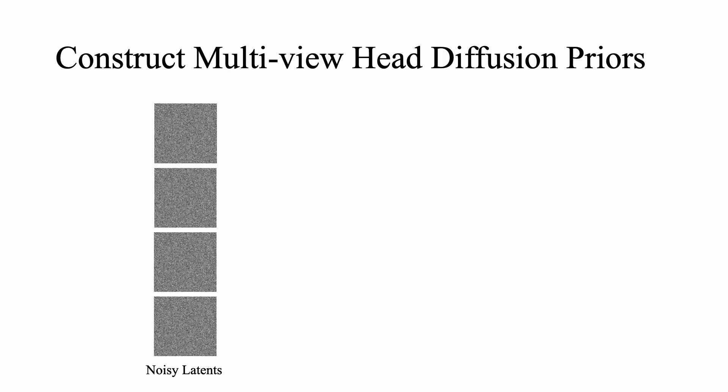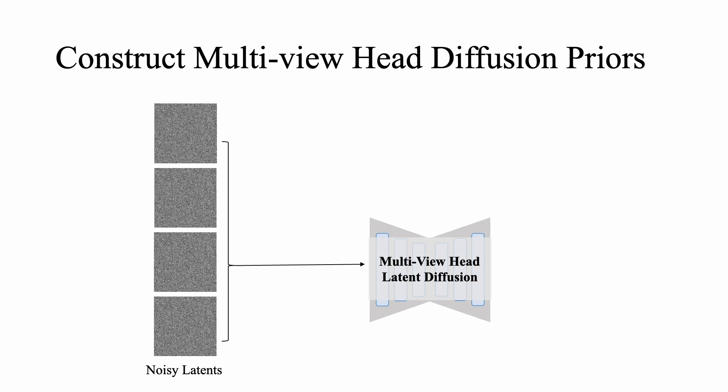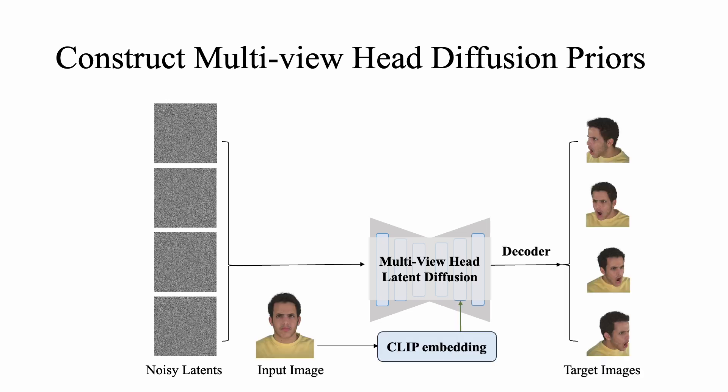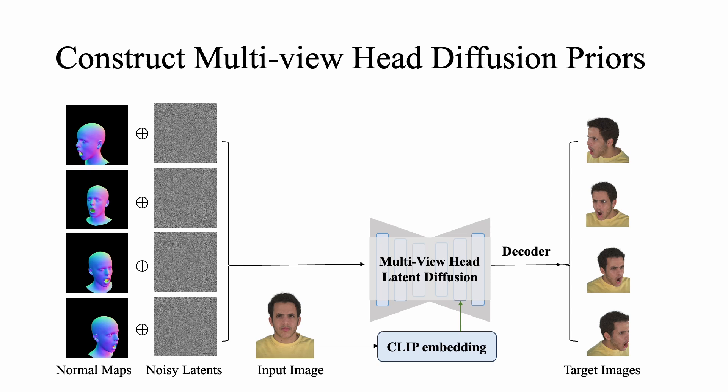We constrain Gaussian head reconstruction using multi-view head diffusion priors. Specifically, we introduce a normal map conditioned multi-view head diffusion model that generates view-consistent output images from a single-view image. Unlike existing methods that use camera poses for viewpoint control, our approach uses normal maps rendered from FLAME head tracking as guidance. These normal maps provide pixel-aligned inductive biases, enabling more precise and reliable novel view generation for heads.